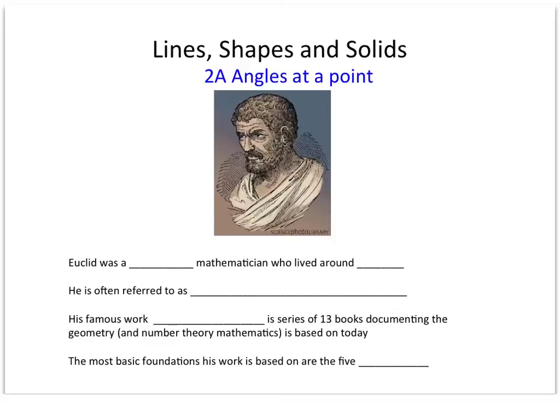This work, the 13 books, wasn't just Euclid's work, it was lots of different mathematicians' work so it wasn't always his original ideas, but he was the first person to document them in such a systematic and organized way. The most basic foundations his work is based on are the five famous axioms. And an axiom is just a starting point or a postulate. So all of the geometry is based on these five axioms, so we're going to have a look at those first.